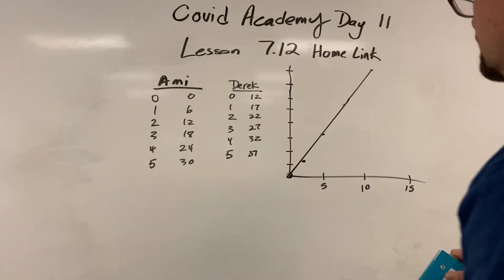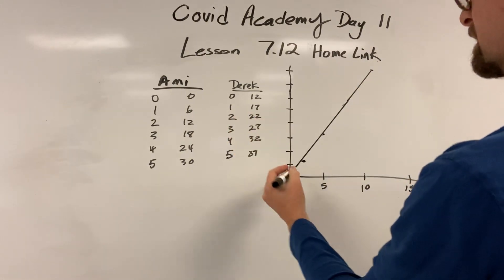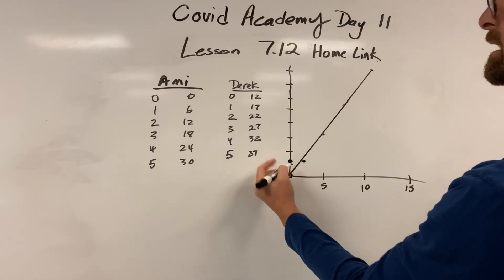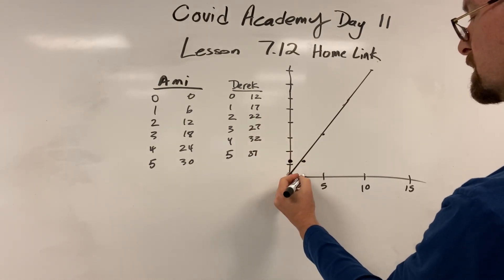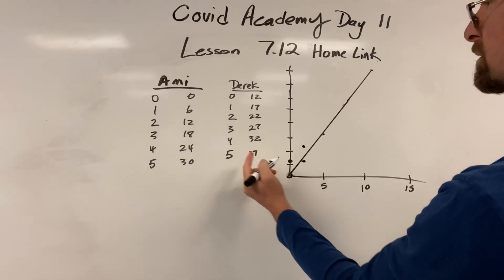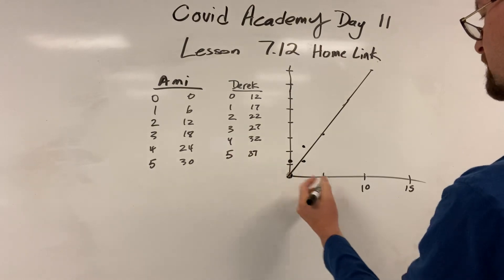Alright. Now we get Derek. 0, 12. So no time here, we go up 12. That's a dot right there. Then we go to 2, 22. That'd be like 2 and 22. Let's just do the ends. 5, 37. 5... There's 30. So there's 5. 37 would be like that, maybe.